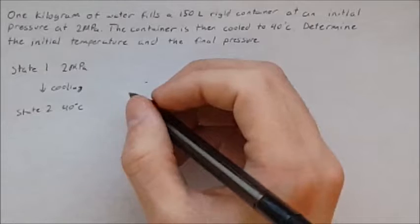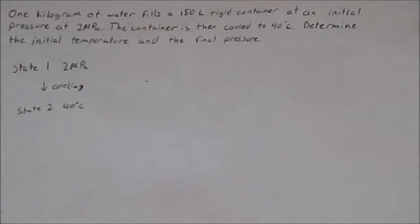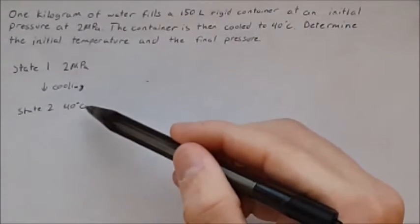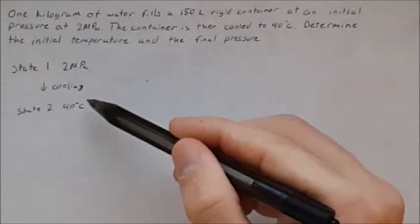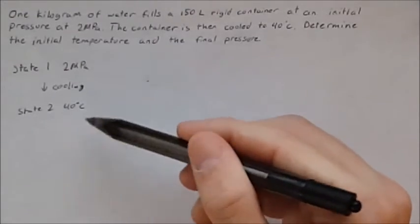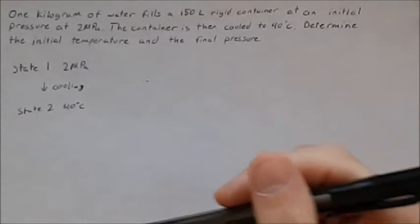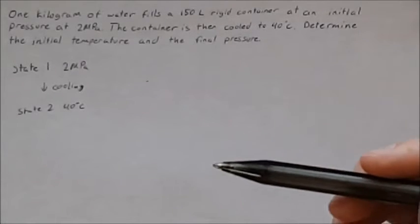So in order to use the property tables in the back of the book we need two intensive properties. We know at state one we have two megapascals and state two at 40 degrees Celsius. Each one of those counts as one intensive property for their state. However we need an additional intensive property in order to define its location.